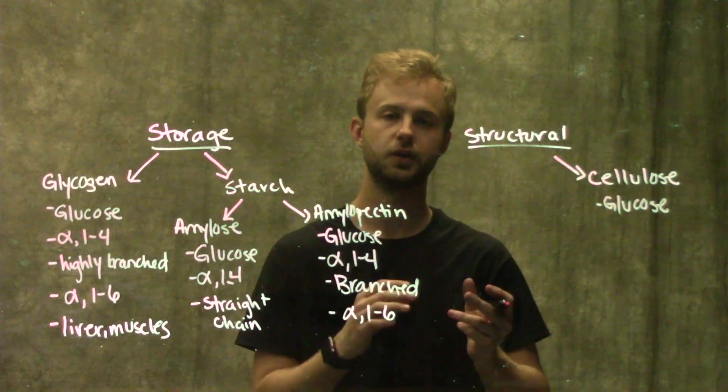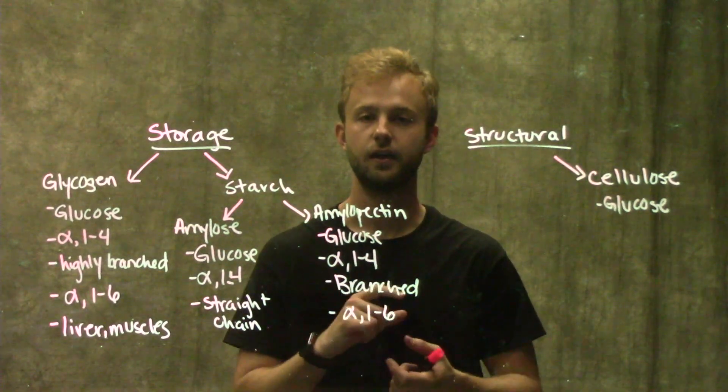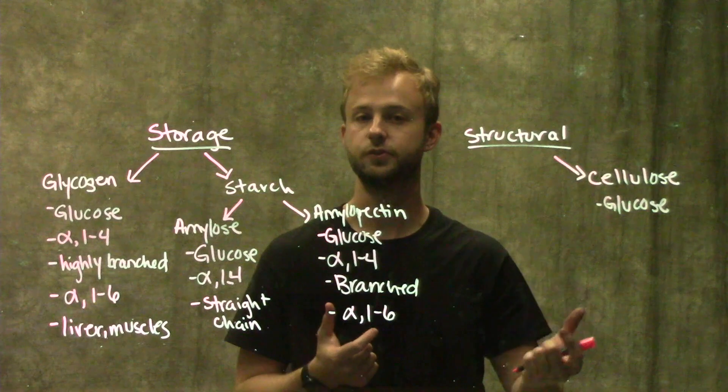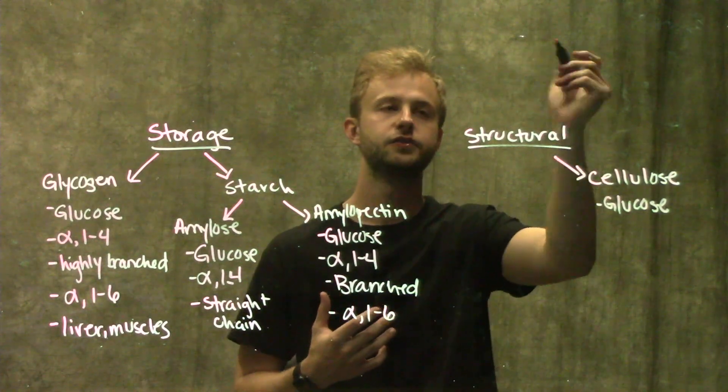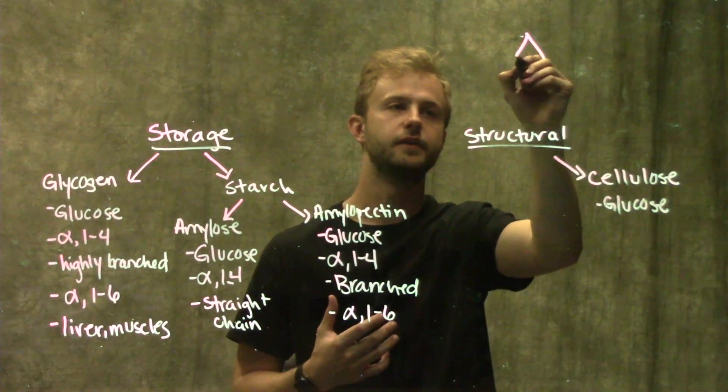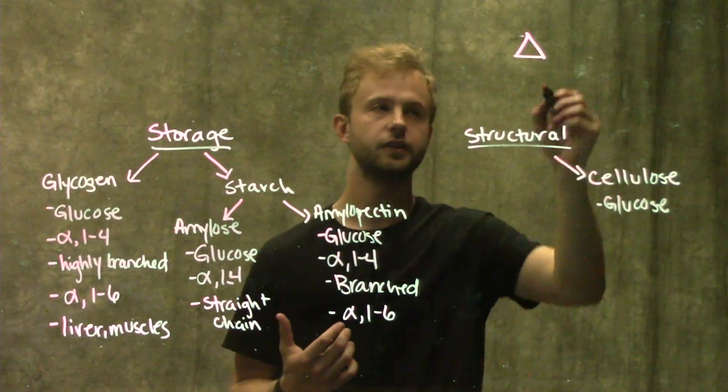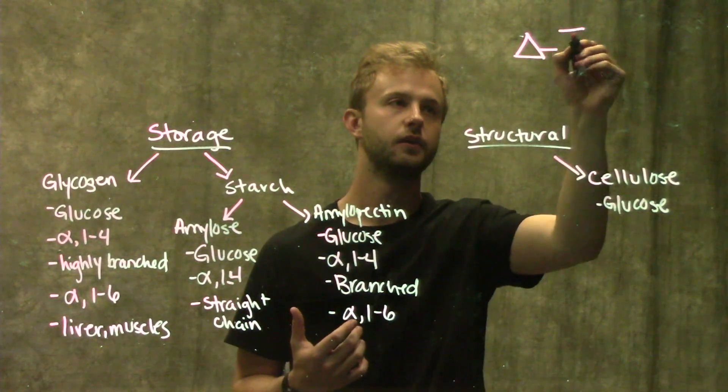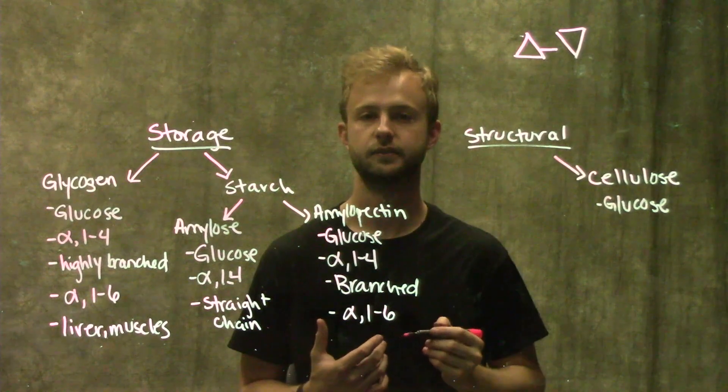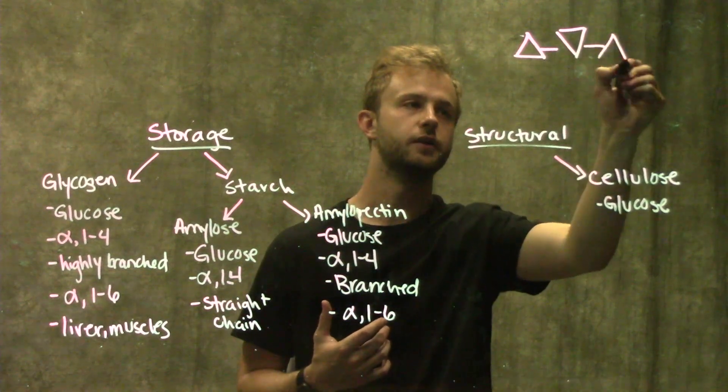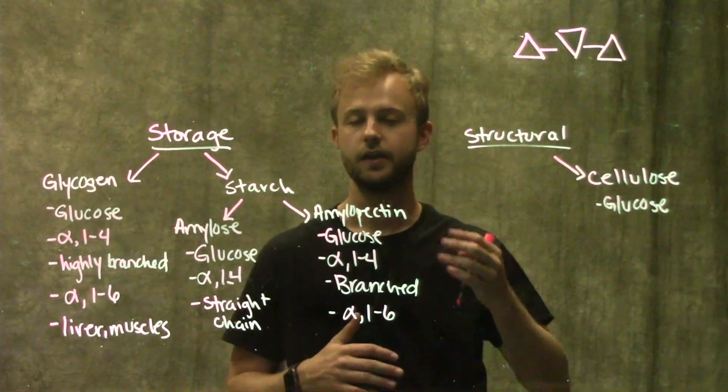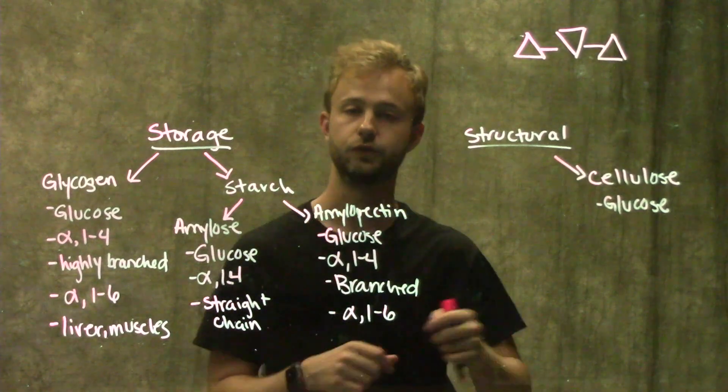Every glucose molecule is upside down in respect to its neighbor in a polymer of cellulose. For example, if this is one glucose molecule in cellulose, its neighbor is going to be like this, and then the next one would go back up. They alternate like that back and forth throughout the whole molecule.